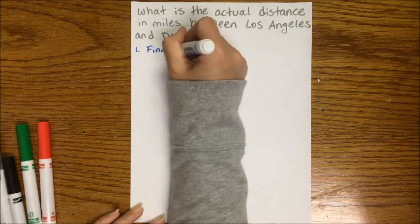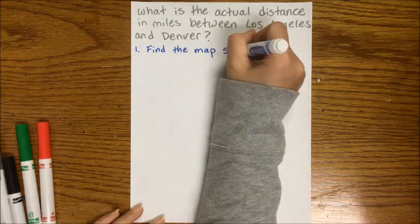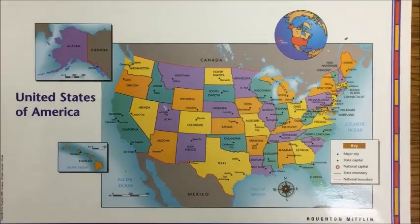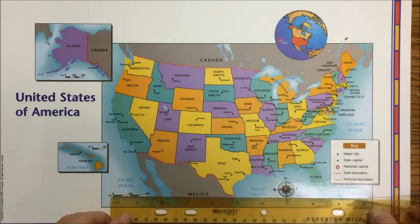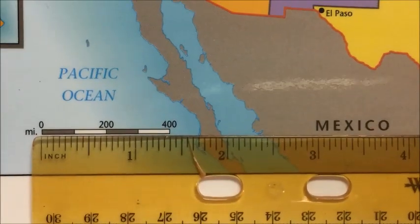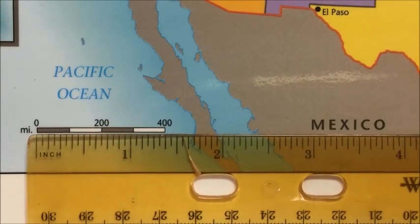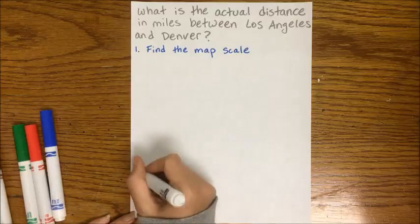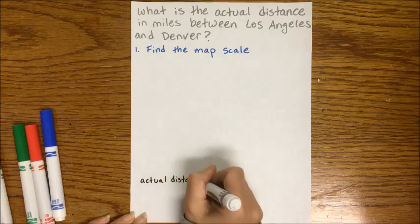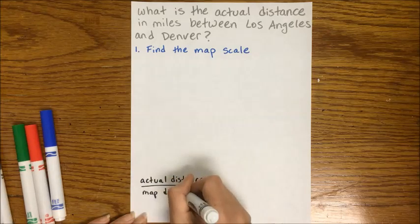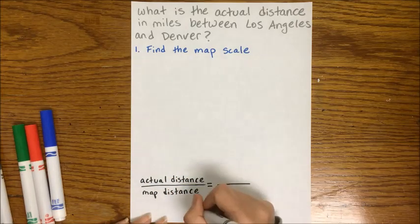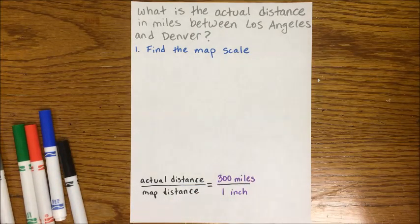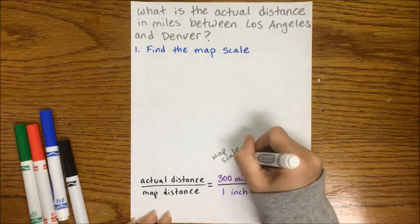Our first step in solving this is we need to find the map scale. If you're using an actual map, this is always given to you somewhere and you just have to line it up with a ruler. So on our map, one inch on a ruler is going to be equal to 300 miles in real life. We're going to write a proportion comparing the actual distance to the map distance — one inch is the same as 300 miles, and that's our map scale.